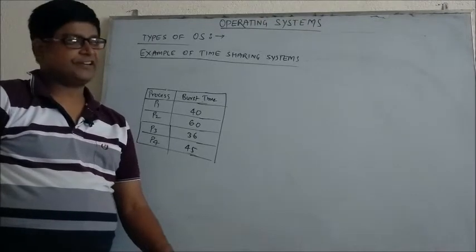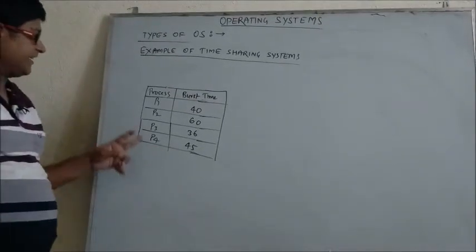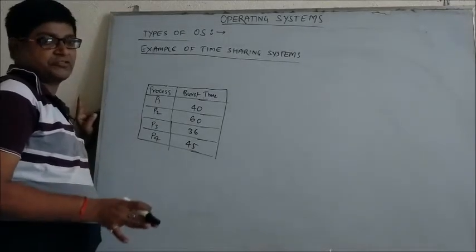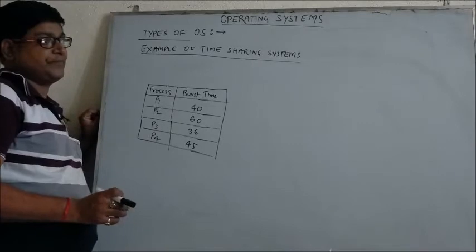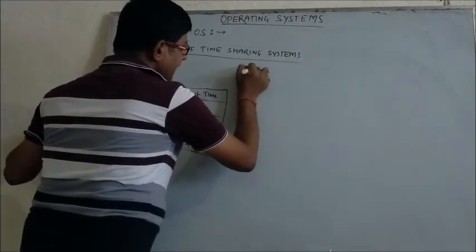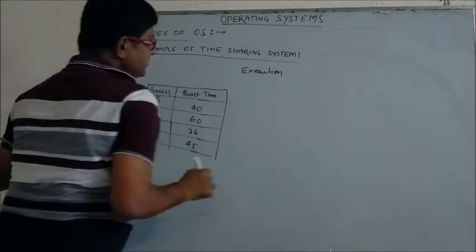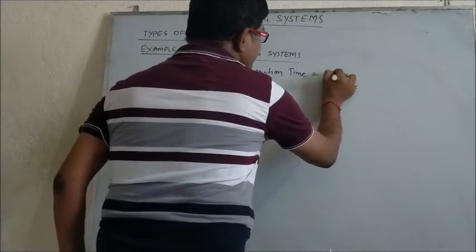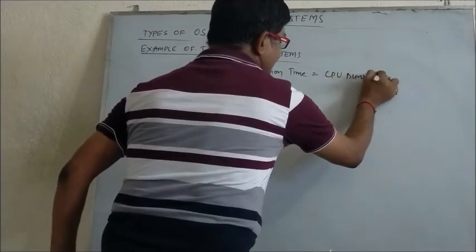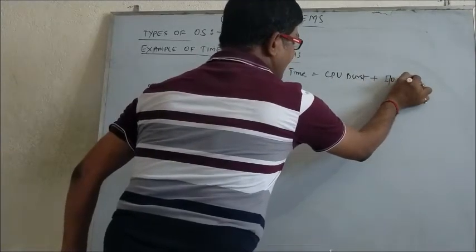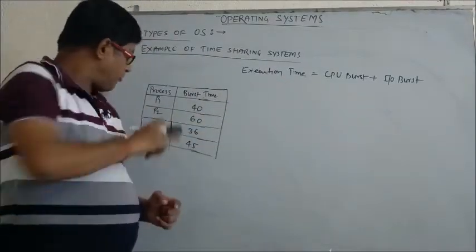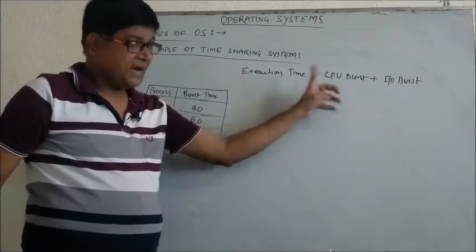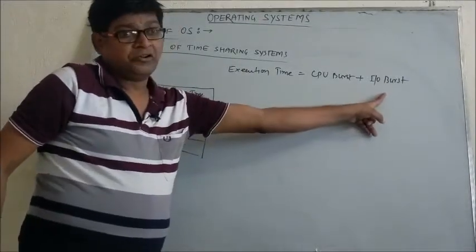Let's have a close look at time-sharing systems with one example. Here I have taken four processes and their burst times. Burst time is the total execution time. Execution time equals CPU burst plus IO burst — CPU burst plus IO burst means the total execution time of a process equals the total time taken for execution by the CPU plus the total time taken by IO routines or IO tasks.